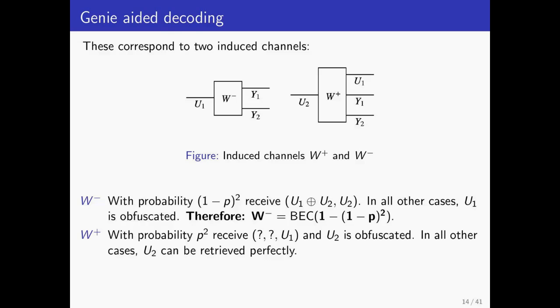On the other hand, let's consider W plus. If Y2 is received, then U2 is directly recovered. Also, if Y1 is received, since we are in a genie-aided setting and assume that U1 is known for this round, we can once again recover U2. This is just by doing Y1 minus U1. So with probability p squared, both Y1 and Y2 are lost and U2 is unrecoverable. And with the remaining probability, we know U2. So once again, in essence, W plus behaves like a BEC, but this time with erasure probability p squared, which itself is less than p, while W minus has erasure probability 1 minus the quantity 1 minus p squared, which is higher than p.